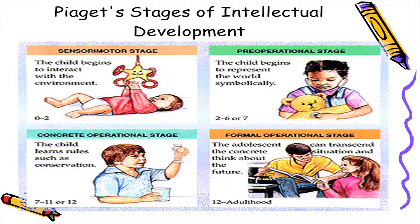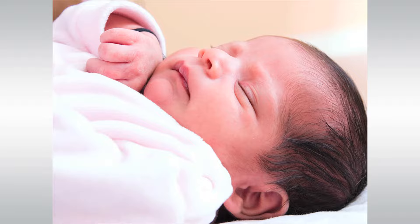Child development can be defined as the process by which a child changes over time. It covers the whole period from conception to an individual becoming a fully functioning adult. It is a journey from total dependence to full independence.